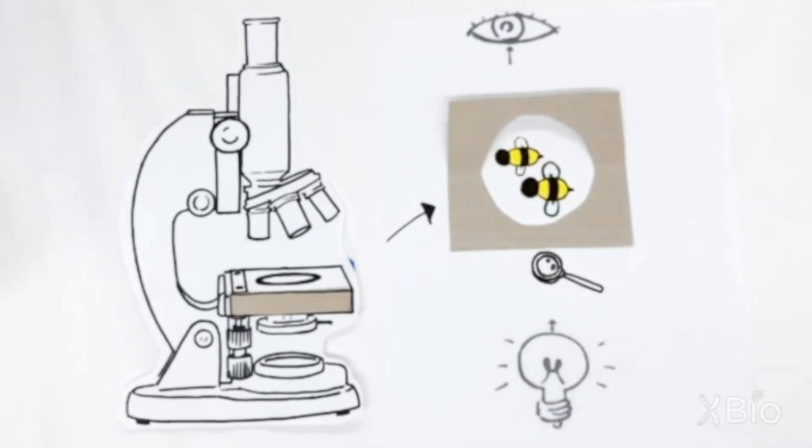So let's take a different bumblebee, one where we've labeled the brain with GFP. Under white light, it doesn't look like much.